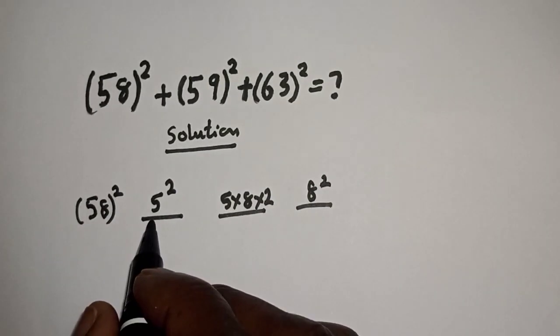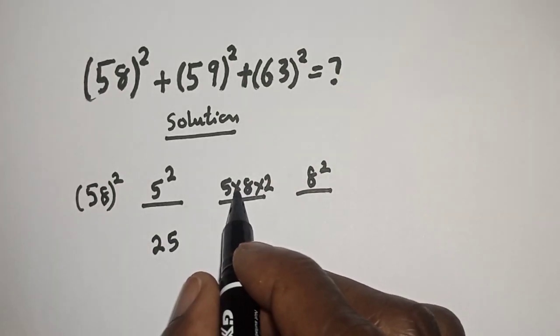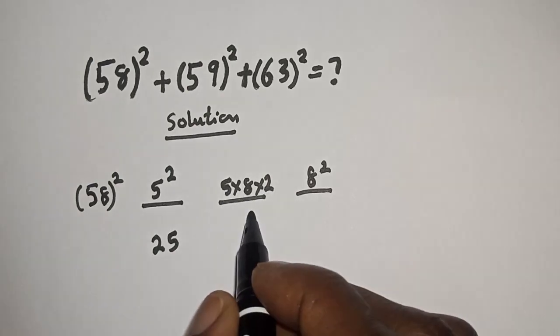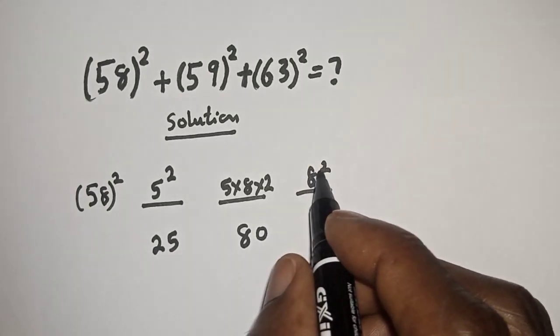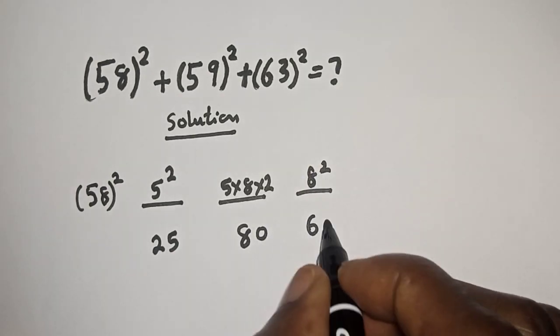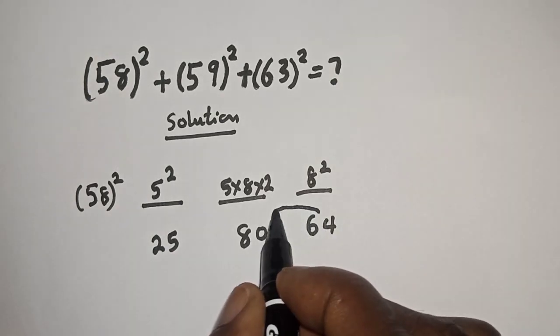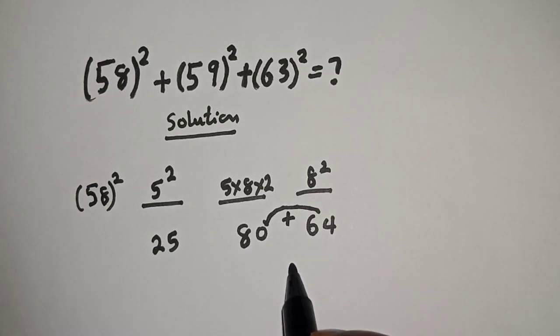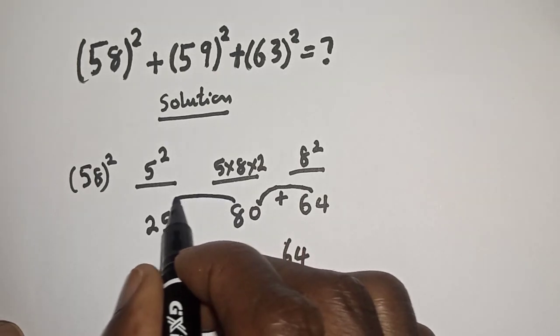So 5 square is 25, 5 multiply by 8 multiply by 2 that is 80, then 8 square is 64. Now let's add everything. We have this to this that is 64, and let's add this to this.